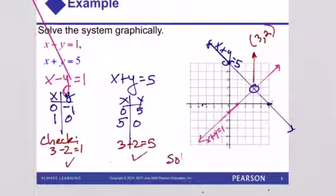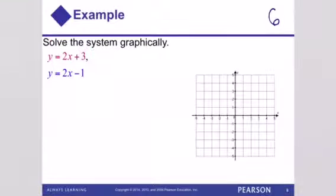The solution to this system of equations is (3, 2). You write it as an ordered pair, because it is an ordered pair, don't write it any other way.